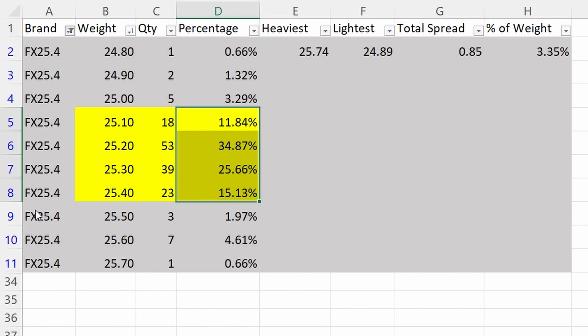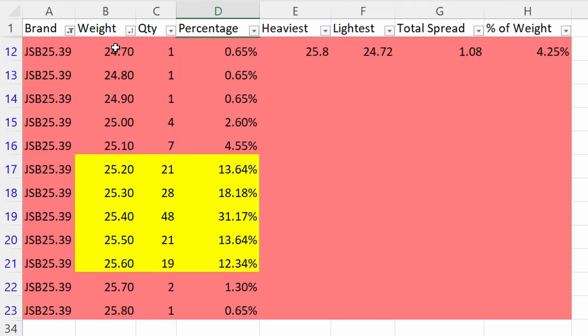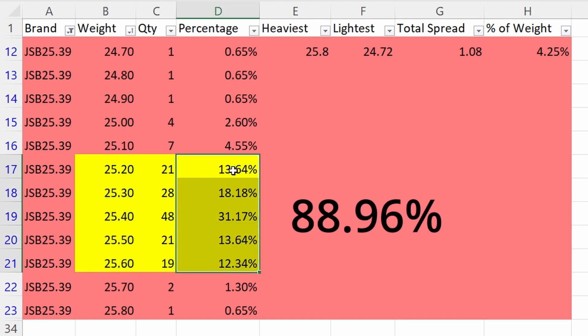If we move on to JSBs, the spread is a little bit larger. So the heaviest pellet was 25.8 grain. The lightest pellet was 24.72. Total spread of 1.8, which gives us a 4.25% variability in weight. What we notice here is it takes 0.5 of a grain to capture 88.96%.